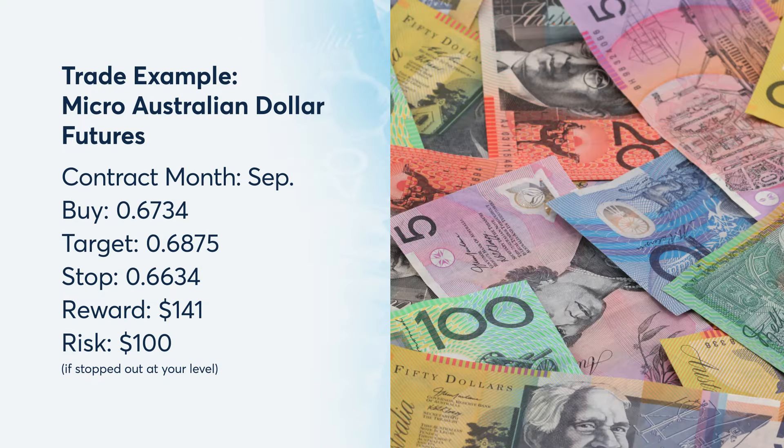If a trader believes the Australian dollar could bounce from here, they could buy the September micro Australian dollar futures contract at 0.6734 and target a move higher. A stop for this trade could be placed below at 0.6634. This trade could make $141 if the target is reached and risks $100 if stopped out at that level.